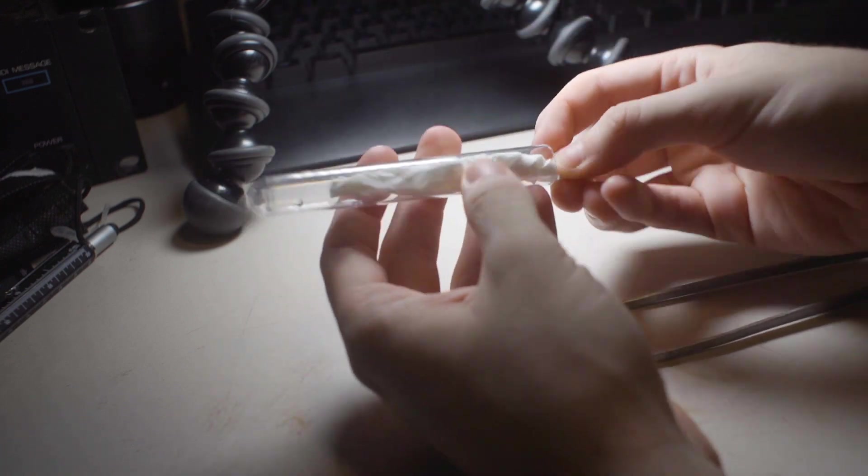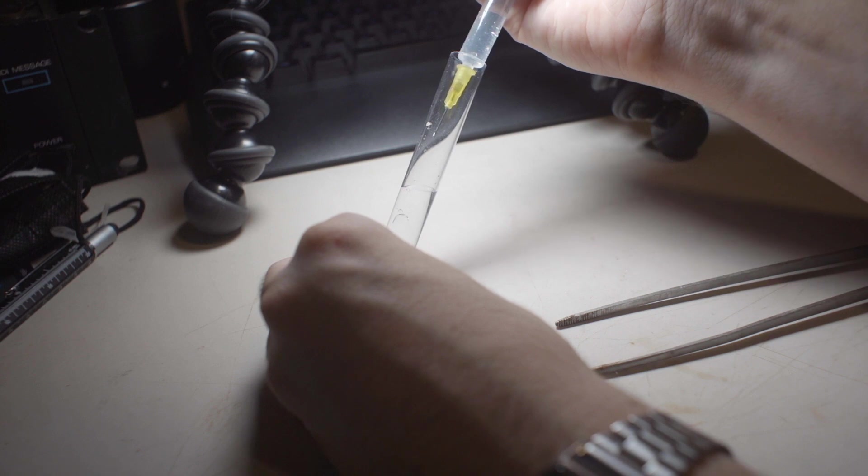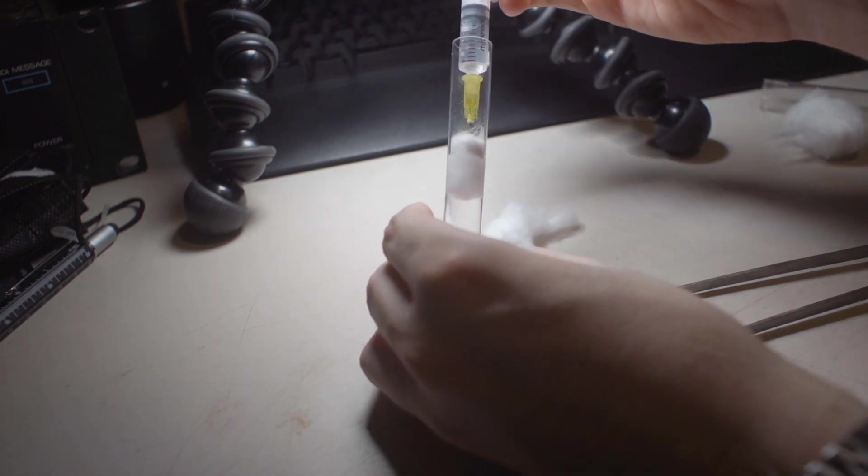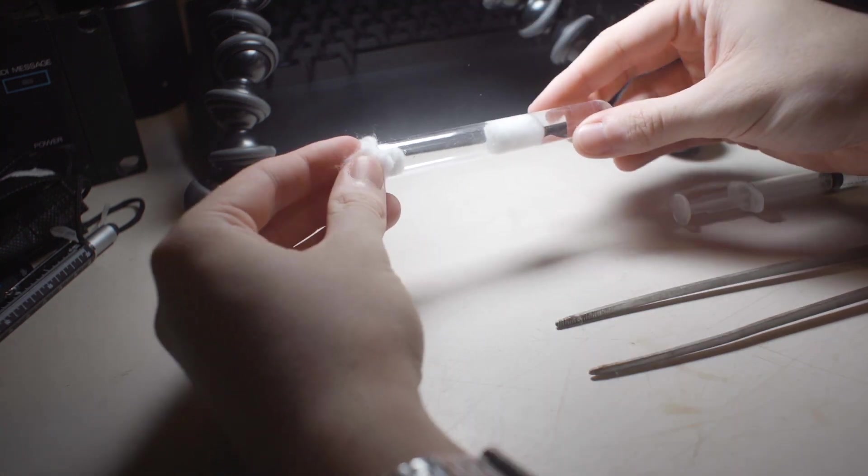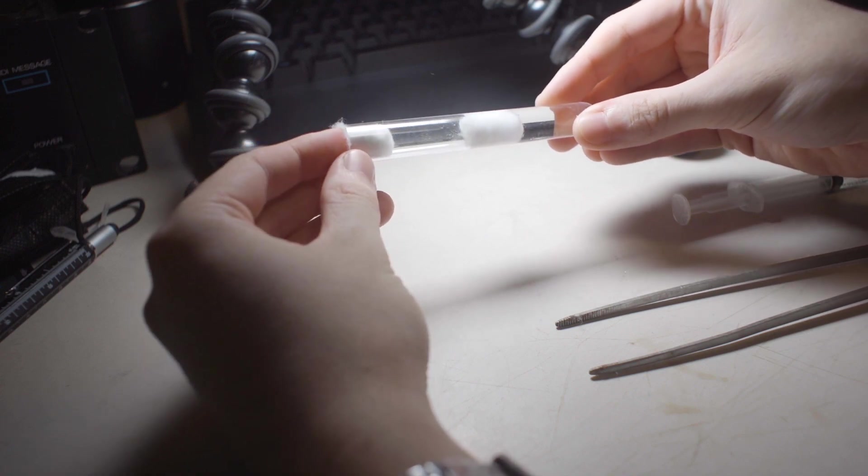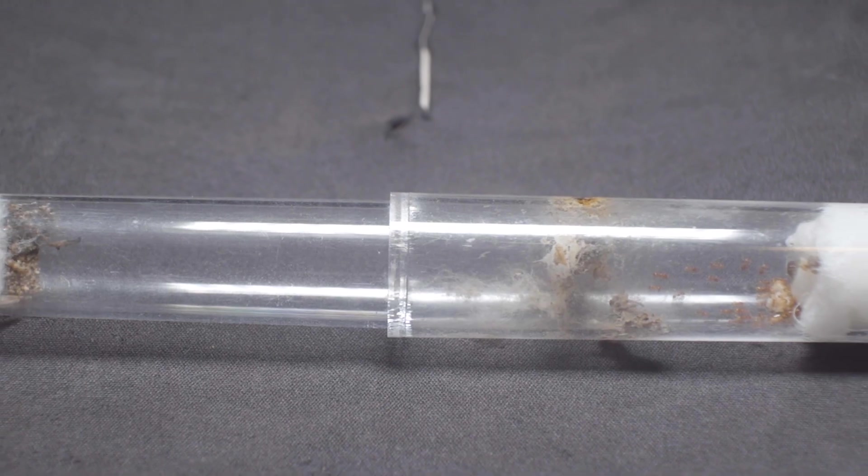Now that the test tube is clean, you can fill it with water and plug it off with cotton, allowing the colony to drink. Normally we would block off the entrance of the test tube with cotton, however, because we are moving a colony into here, we're leaving it open for the time being.